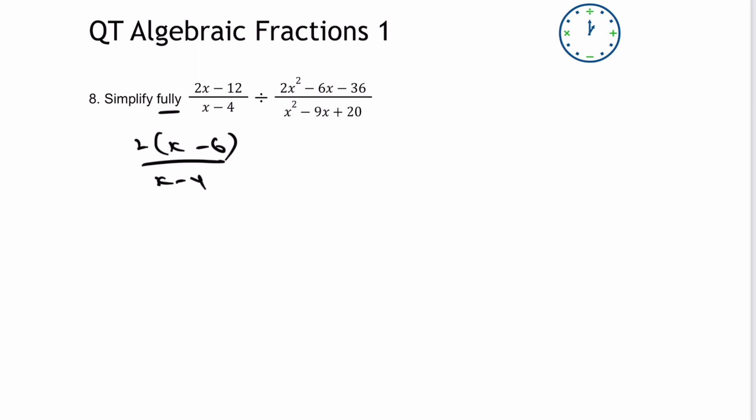Now, when we are dividing fractions, what we do is multiply and flip. So now my new numerator is going to be this expression, which I can then factorise for x minus 5 multiplied by x minus 4.